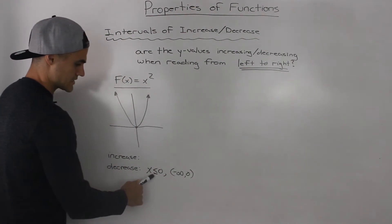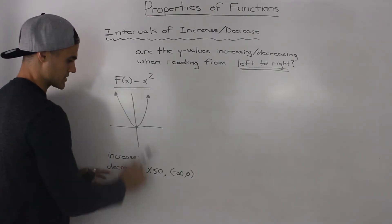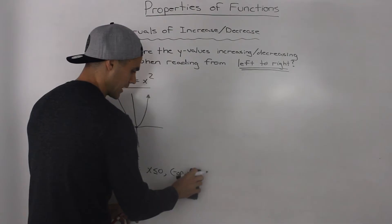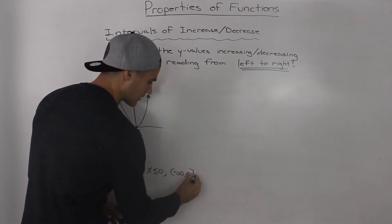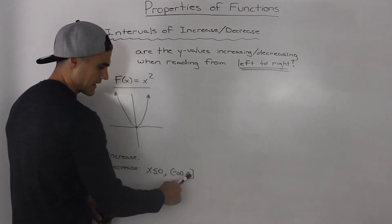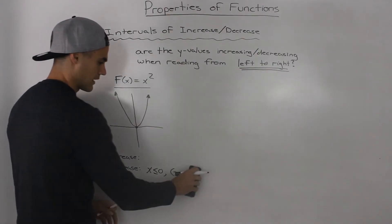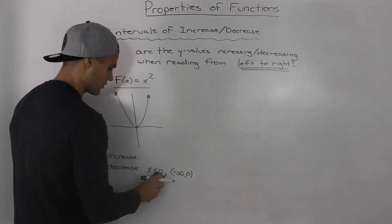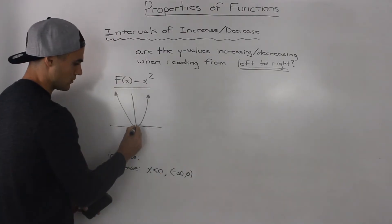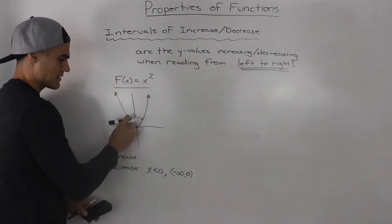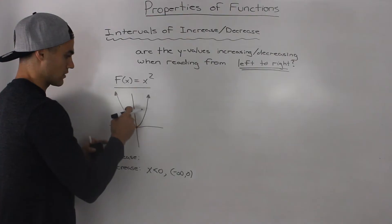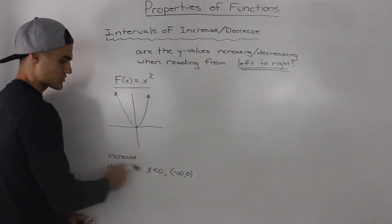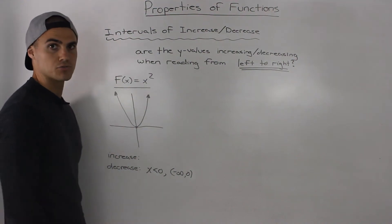Another thing to notice is how I didn't make zero inclusive — I didn't say the function is decreasing when x is less than or equal to zero, and I didn't put a square bracket, because that would mean zero is included. The reason I didn't include zero is because at an x value of zero, it's a minimum point — it's neither increasing nor decreasing, so it's not part of these intervals.